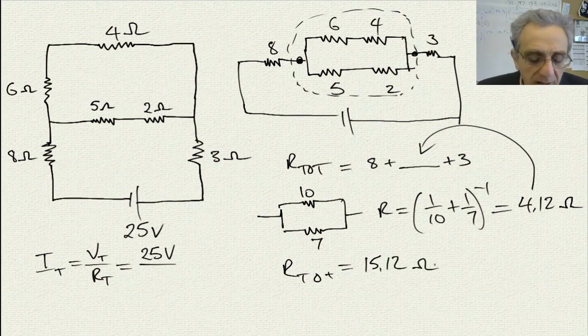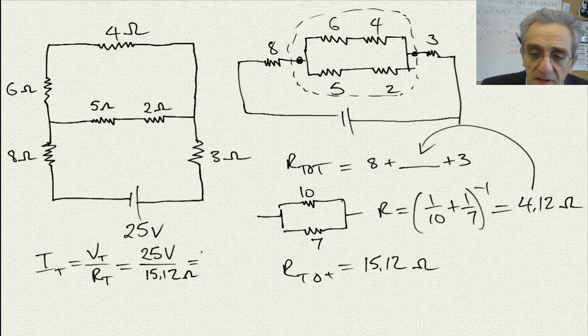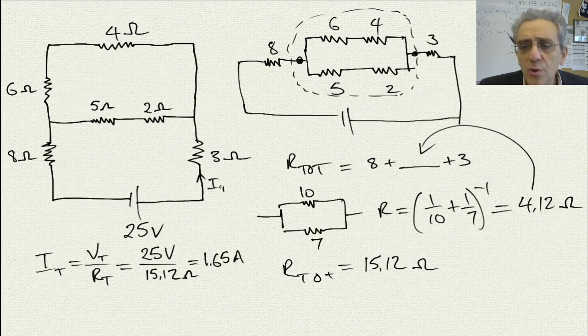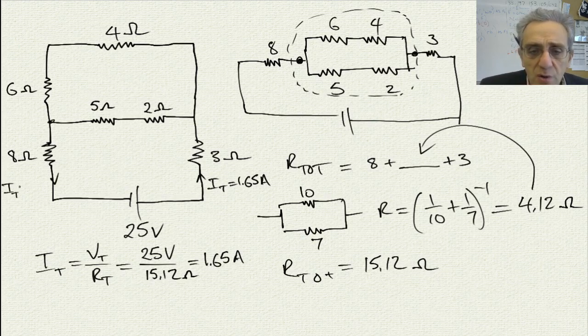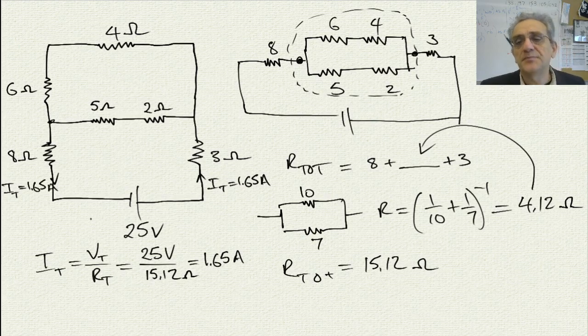Now I can take this and divide it into my 25 volts because I can calculate my total current by going total voltage divided by total resistance. And I know my total resistance now, it's 15.12. And this is going to give me a total current of approximately 1.65 amps. Now that I know that my total current is 1.65 amps, I also know that this current is going to split here, but it's also going to recombine here. Therefore, I'm going to have a total current going through here also of 1.65 amps.